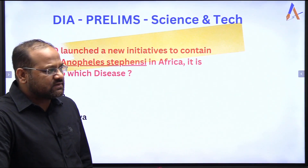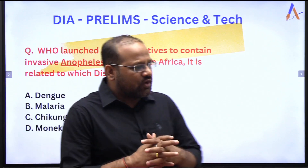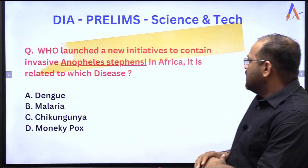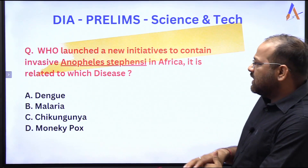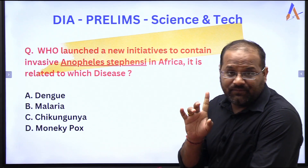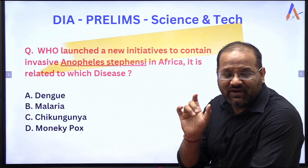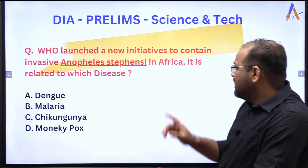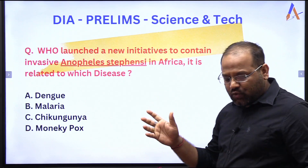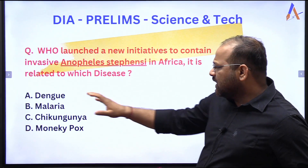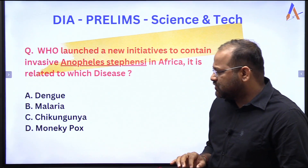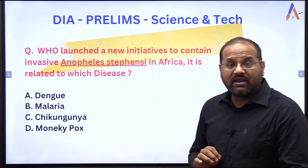So the question is: WHO has recently launched a new initiative to contain invasive Anopheles stephensi — and this word 'invasive' is very important — in Africa. It is related to which disease? The options are: dengue, malaria, chikungunya, or monkeypox.